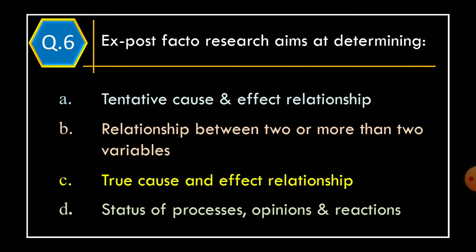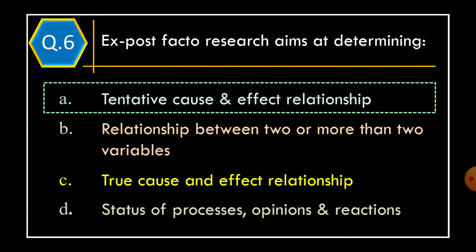Question 6. Ex-post facto research aims at determining: Option A, tentative cause and effect relationship; Option B, relationship between two or more than two variables; Option C, true cause and effect relationship; Option D, status of processes, opinions, and reactions. The correct option is Option A.